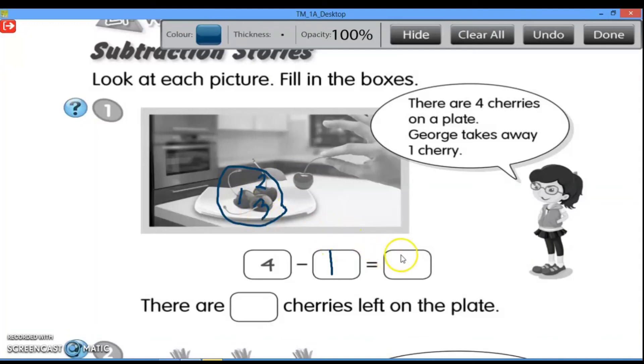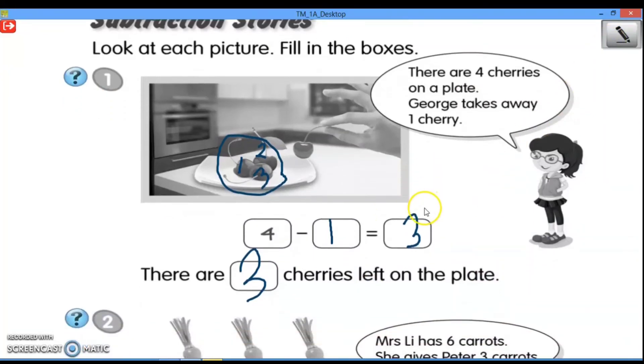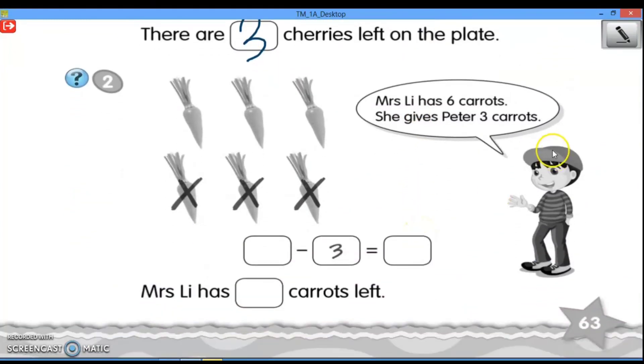Jadi, four minus one equals three. So, there are three cherries left on the plate. Jadi, ada tiga cherry yang tersisa di piring. Untuk nomor dua, coba teman-teman kerjakan ya.